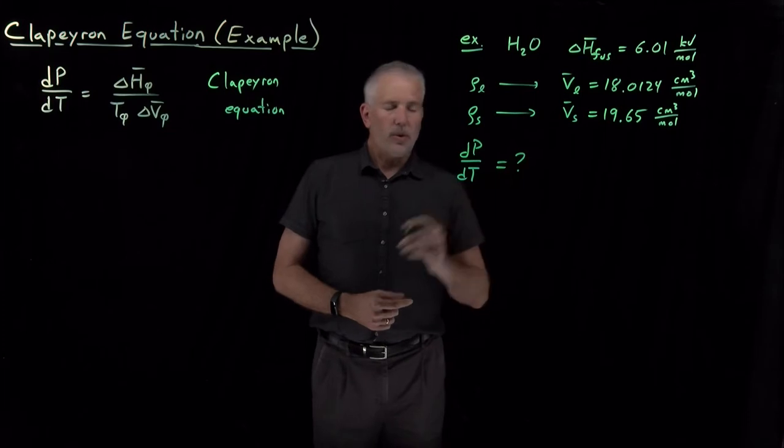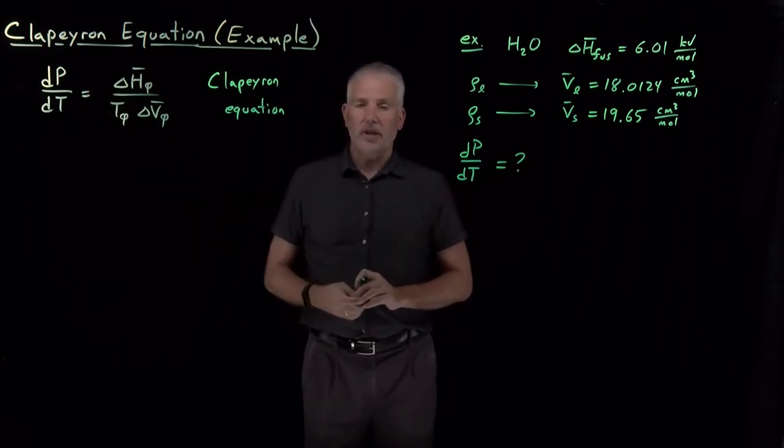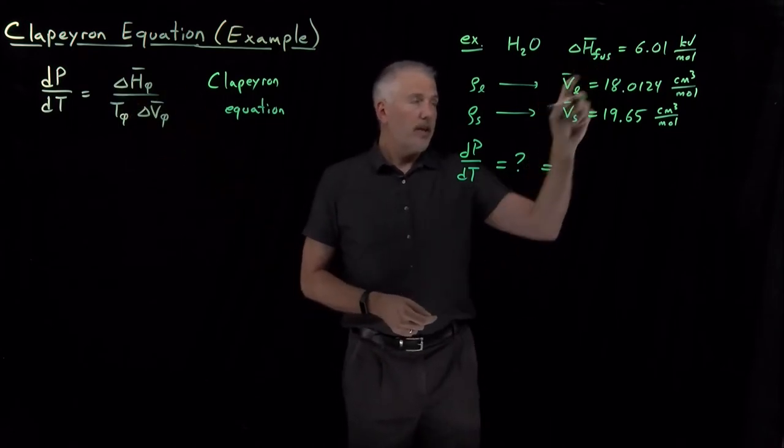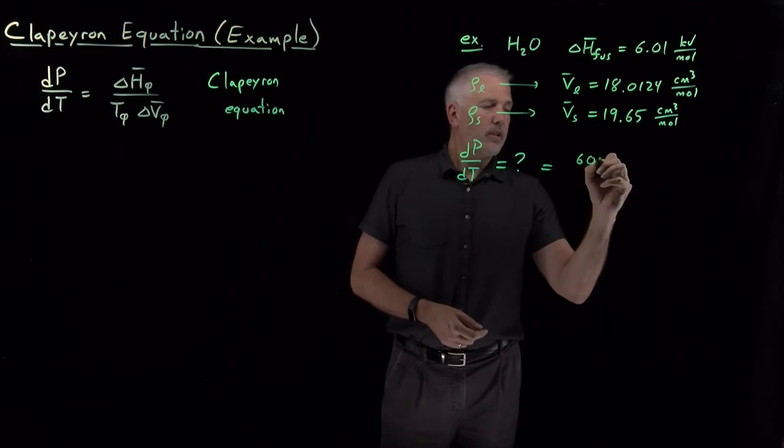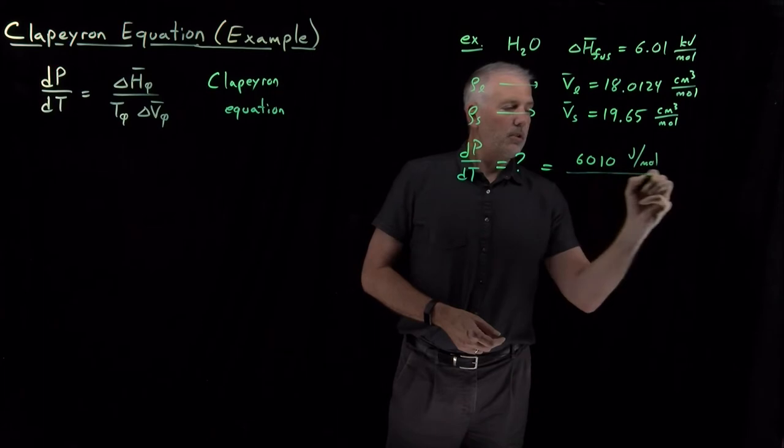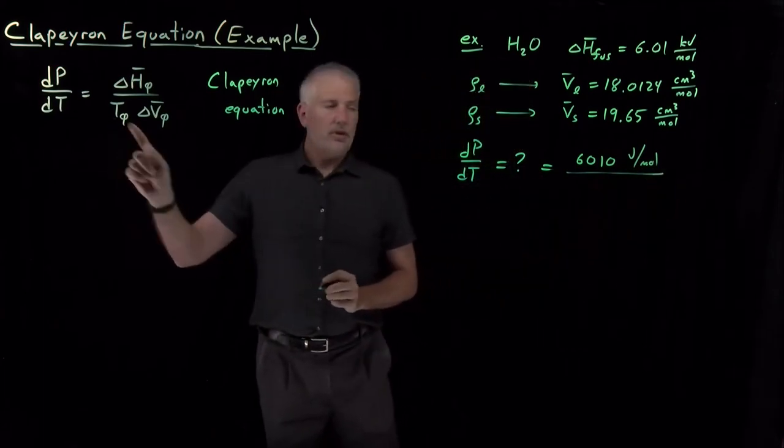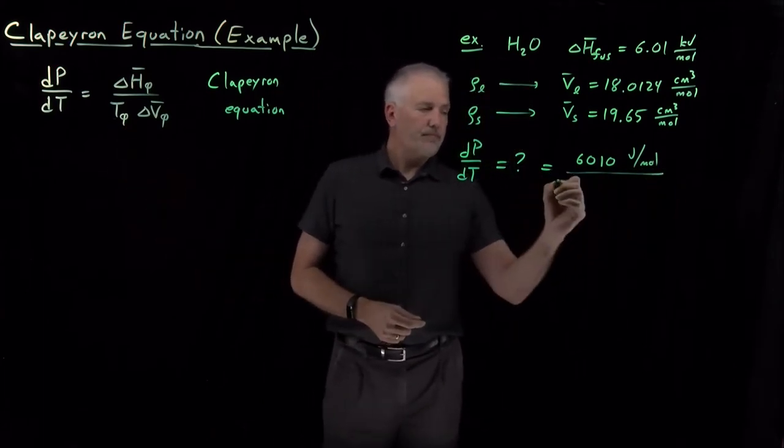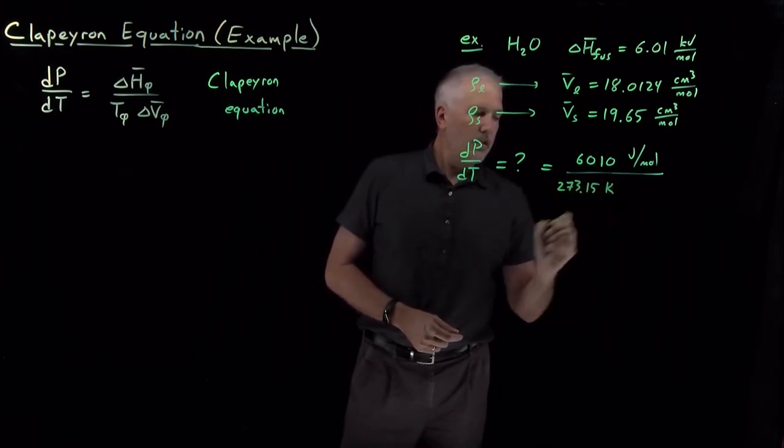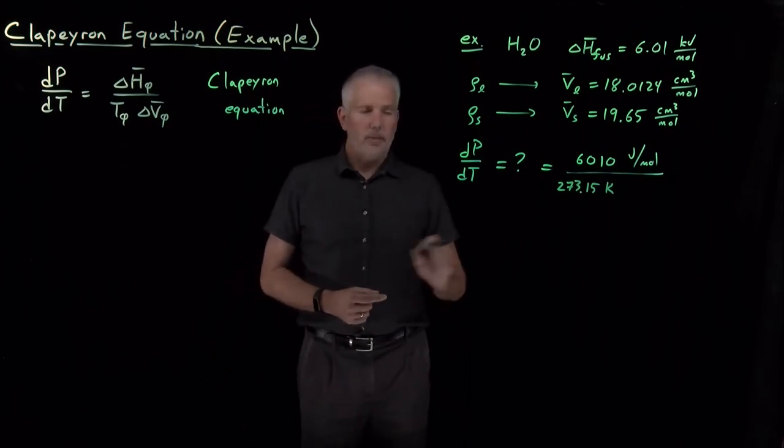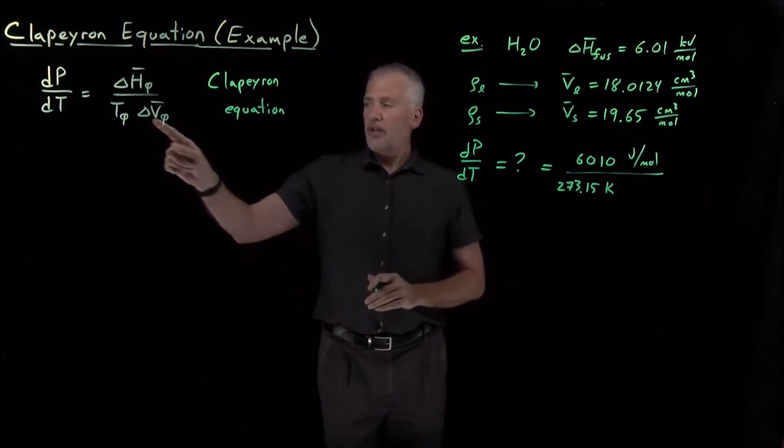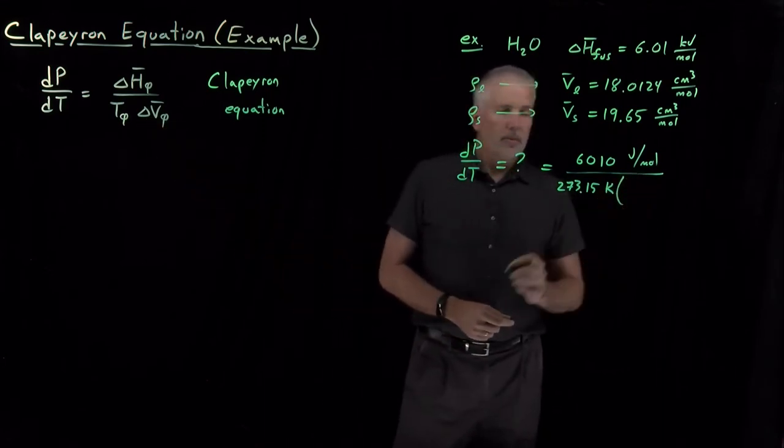If that's our question, what is the slope dP/dT for the solid-liquid coexistence line? Clapeyron equation tells us how to calculate that. Enthalpy of fusion, 6.01 kilojoules per mole or 6010 joules per mole. The temperature I need is the temperature of fusion, the temperature of the melting point. That's 273.15 Kelvin, freezing point of water.